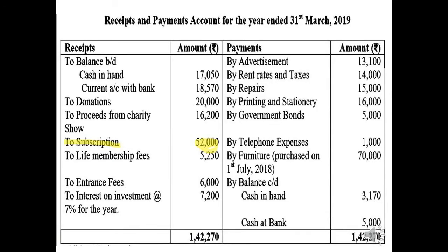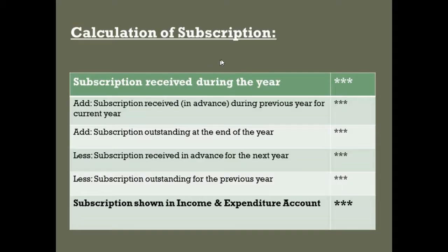Subscription is the main source of income for a non-profit organization, besides entrance fees, grants, donations, etc. It is shown on the debit side of the receipt and payment account with the total amount received during the year. It may be related to the current period and to the previous and next accounting period. Now let's see the calculation of subscription.